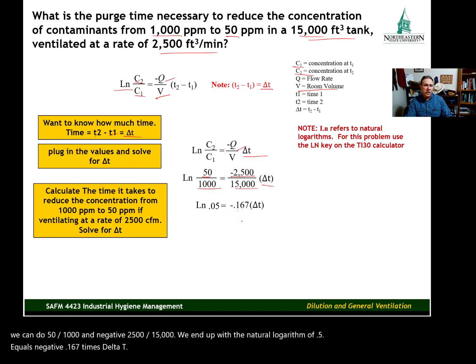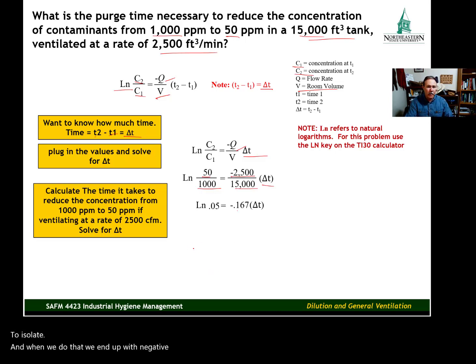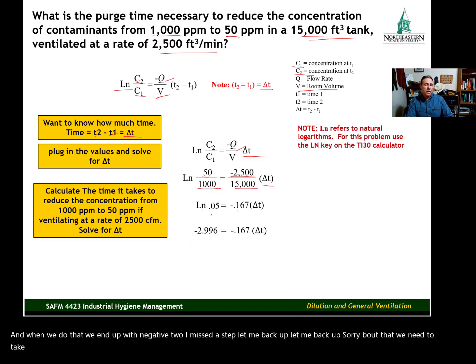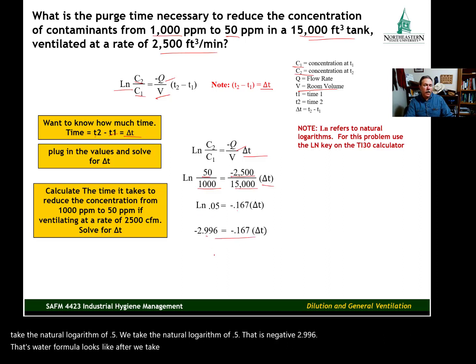Now to solve for delta T, we need to divide both sides by negative 0.167 to isolate. And when we do that, we end up with negative 2... I missed a step. Let me back up. We need to take the natural logarithm of 0.05. When we take the natural logarithm of 0.05, that is negative 2.996. And that's what our formula looks like after we take the natural logarithm of 0.05.